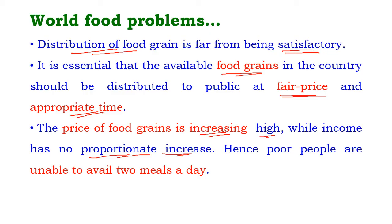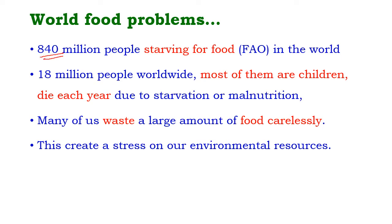Poor people are unable to afford food grains and face starvation. According to the Food and Agriculture Organization, around 18 million people worldwide — most of them children — die each year due to starvation or malnutrition. An important issue is wastage of food: many of us waste large amounts of food at homes, parties, and functions carelessly, creating stress on our environmental resources.